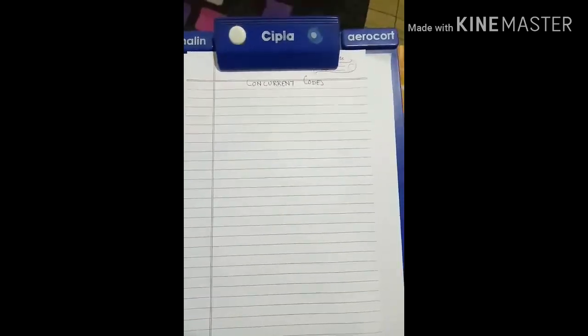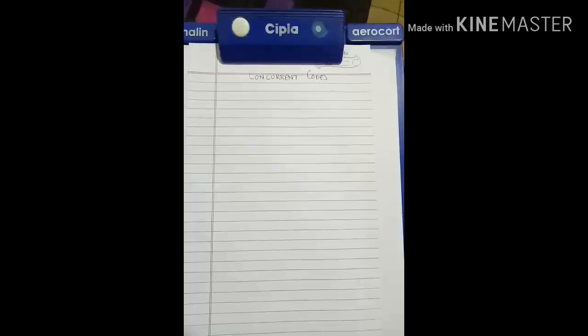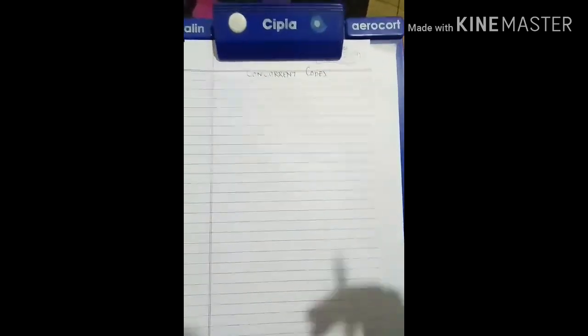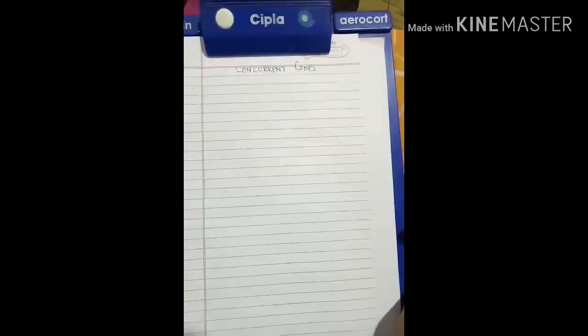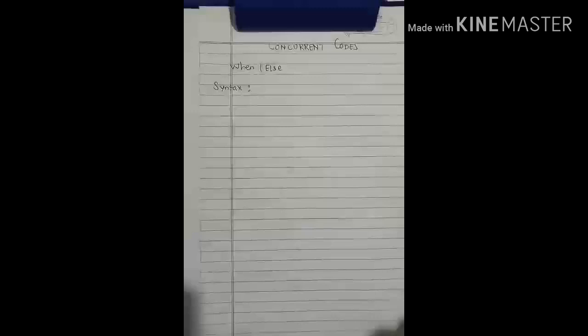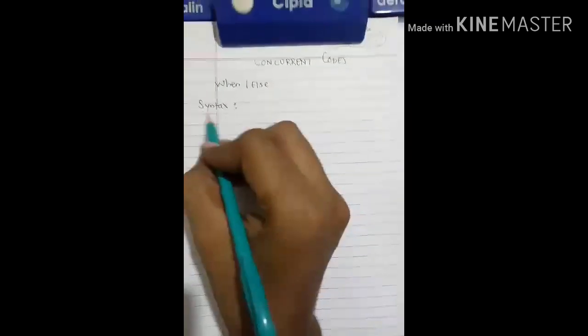about the when statement. The when statement is one of the fundamental statements of concurrent codes. It appears in two types: first is when-else and second is with-select-when. In today's video we will see the when statement. Before going into problems, let us look at the syntax of when-else.